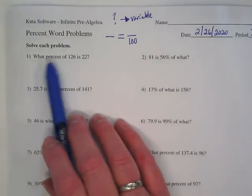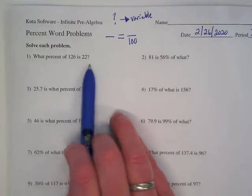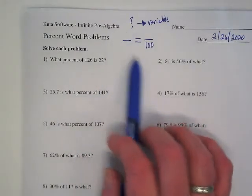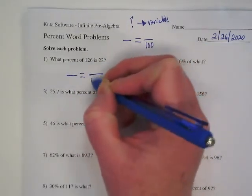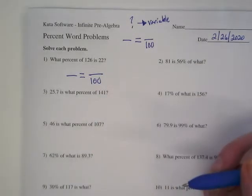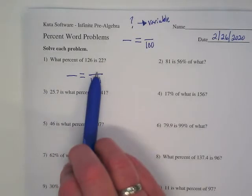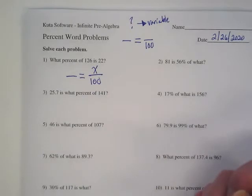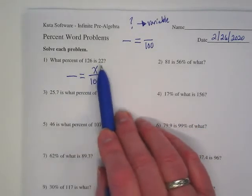The first question says, what percent of 126 is 22? So we're going to set up a proportion where we know the base of one is 100. The question is asking what percent. That means our variable is going to go with the 100. We're trying to find a missing percent.